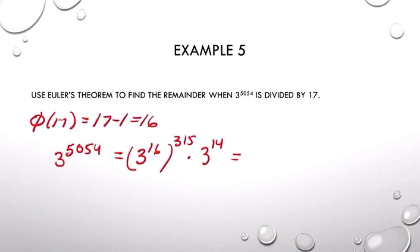So 5054 divided by 16 gives us 315 with a remainder of 14. So we can rewrite 3 to the 5054. And then 3 to the 16th is congruent to 1. So 1 to the 315th is 1, and we're just left with this 3 to the 14th.